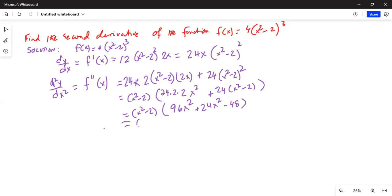Or this becomes (x² - 2) and 96 plus 24 is 120x² minus 48. Now from the second term I can take the common factor 24 out, which will leave with 5x² - 2 from the second term.